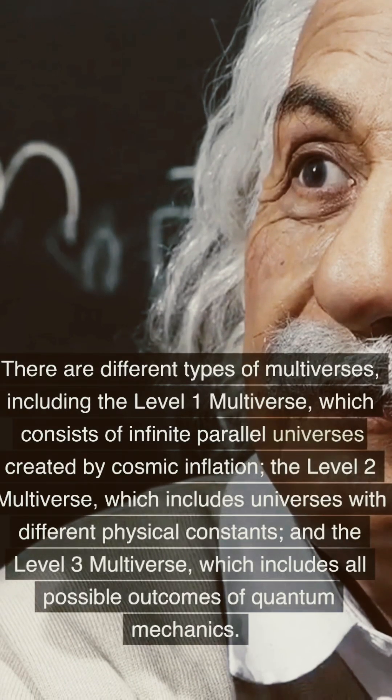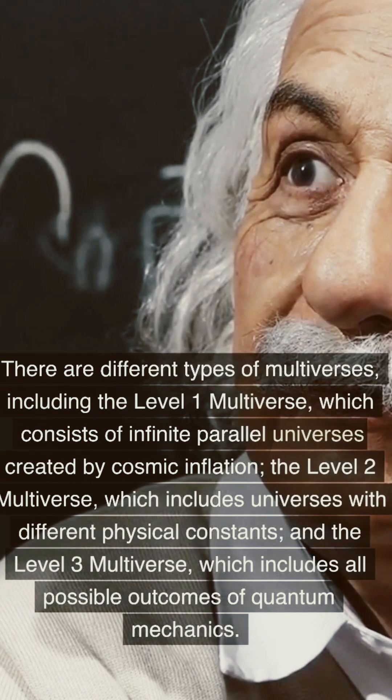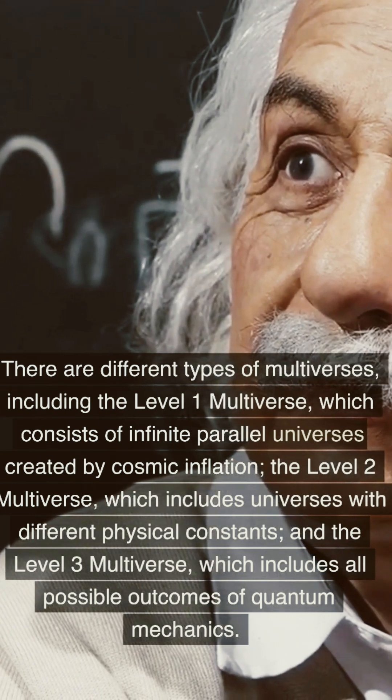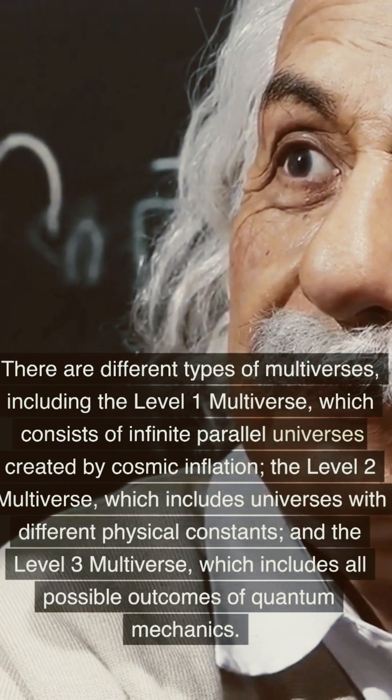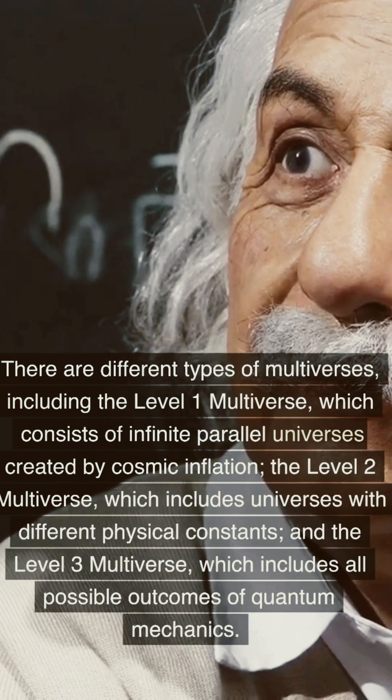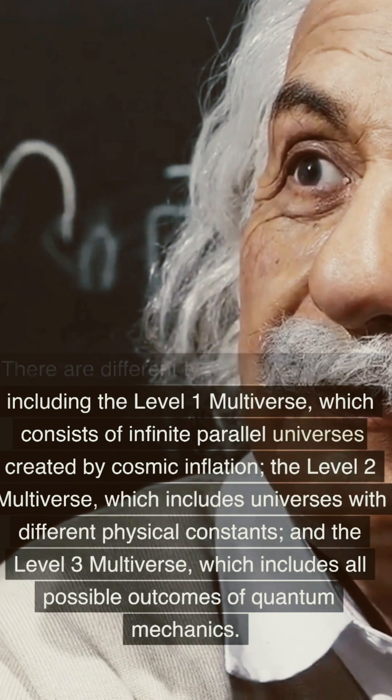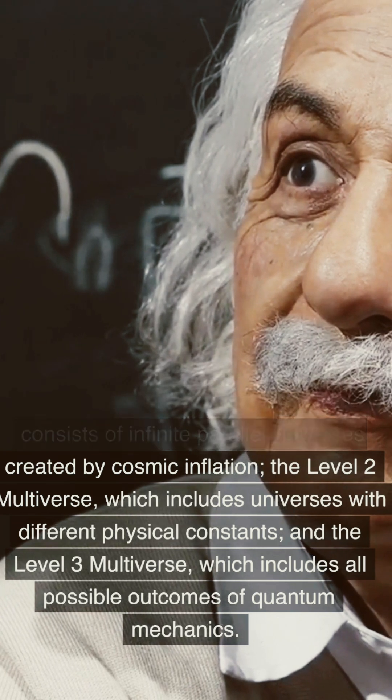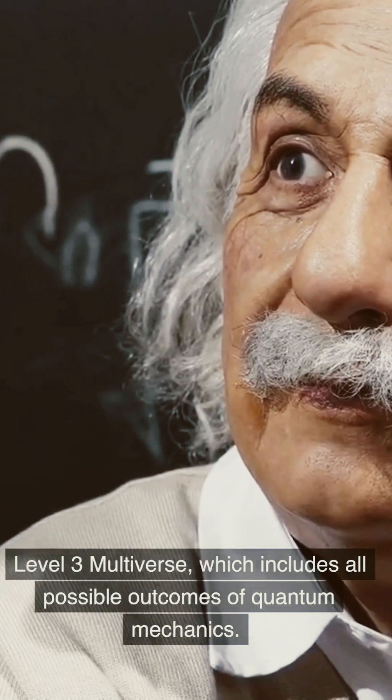There are different types of multiverses, including the Level 1 multiverse, which consists of infinite parallel universes created by cosmic inflation; the Level 2 multiverse, which includes universes with different physical constants; and the Level 3 multiverse, which includes all possible outcomes of quantum mechanics.